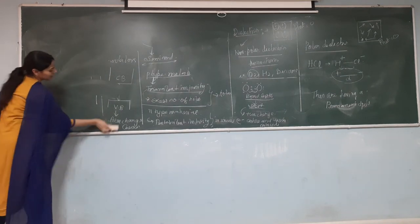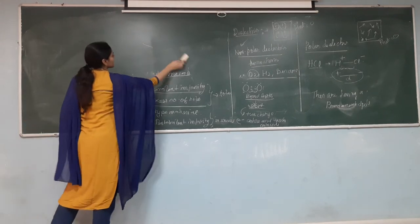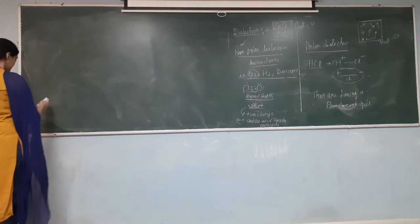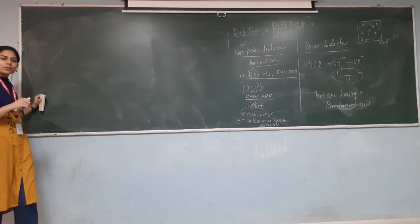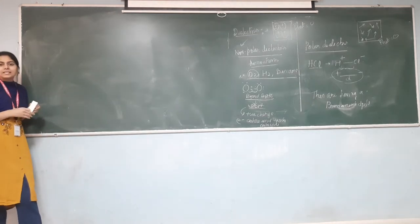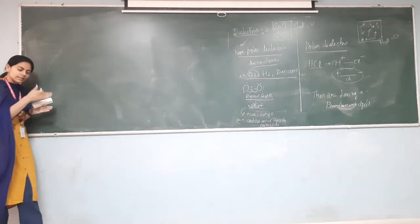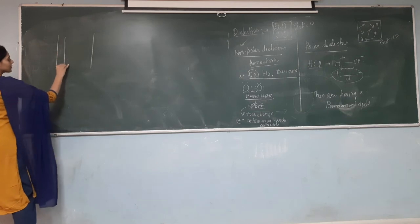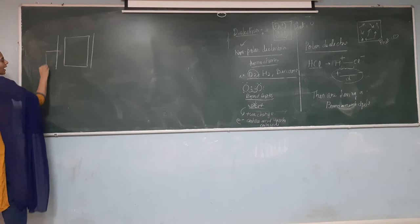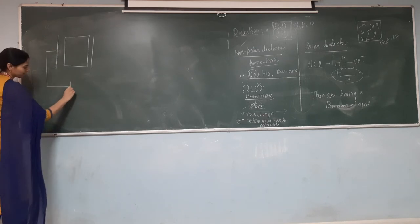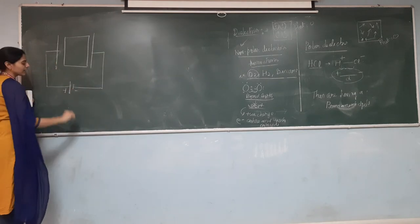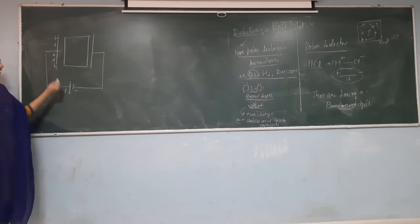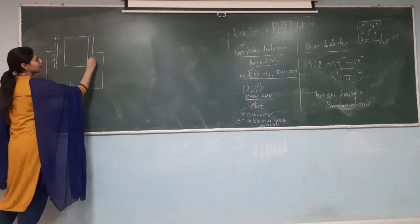Now we will discuss how inserting a dielectric inside a parallel plate capacitor increases its capacitance. When the dielectric material is inserted between charged capacitor plates connected to a battery, the positive terminal charges one plate positively and the negative terminal charges the other plate negatively.